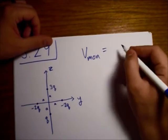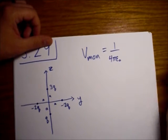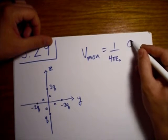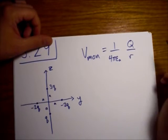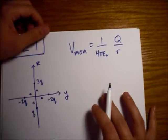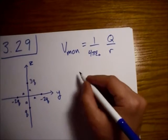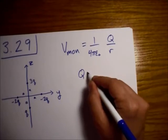the potential monopole term. We have our 1 over 4πε₀. And then we have a big Q over R. R, of course, is the distance from the origin. Big Q is the total charge. So,